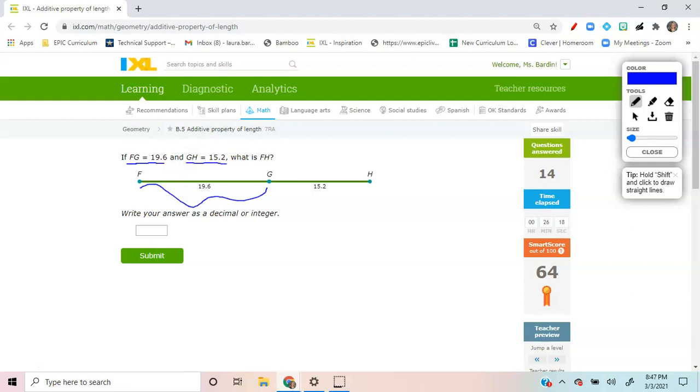The measure or distance from G to H is 15.2. The question asks,